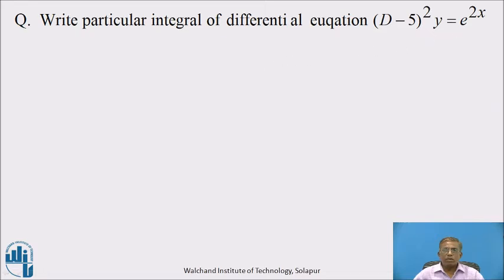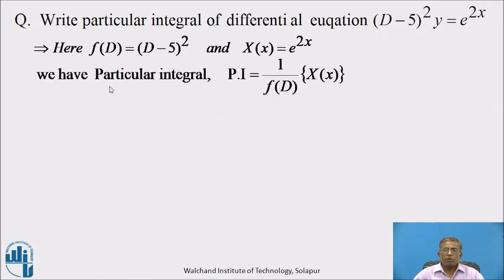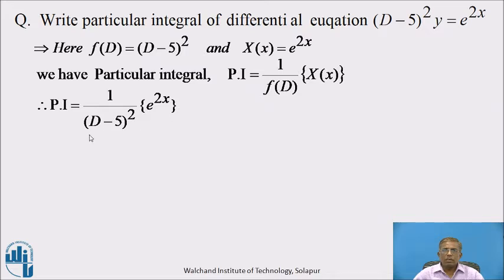Come back — I hope you have written the answer to the question. Let us see the solution. The given differential equation is of the type f(D)·y = X(x). Here, f(D) = (D − 5)² and X(x) = e^(2x). We know the formula for particular integral: PI = 1/f(D) operating on X(x). Therefore, PI = 1/(D − 5)² operating on e^(2x).